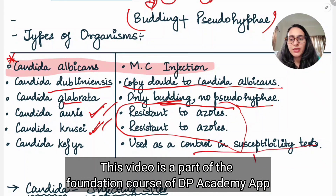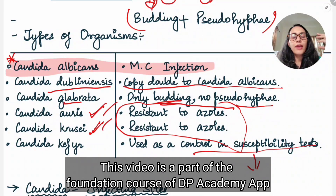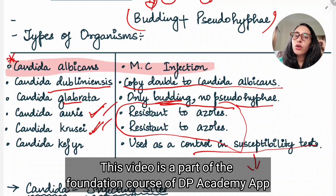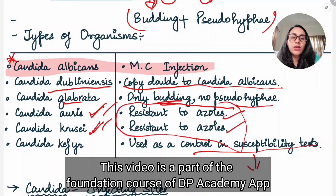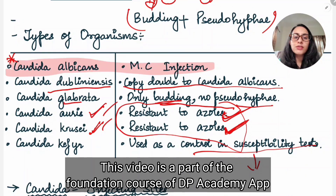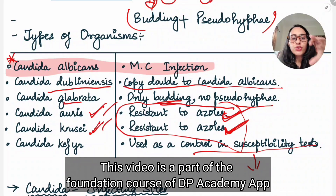Then we have Candida kefyr, which is used as control in susceptibility testing. When we do sensitivity testing, we check whether a particular drug works against a particular organism — whether the fungus is resistant to a particular drug or not. Similar to antibiotic sensitivity testing for bacteria, we also do this for fungus. In that sensitivity testing, we find that Candida auris and Candida cruzi are both resistant to azoles — meaning azoles are not working for them. The control group in the susceptibility test is Candida kefyr.